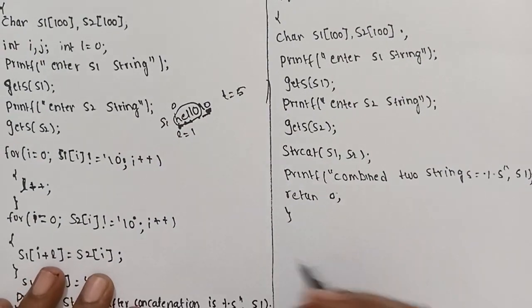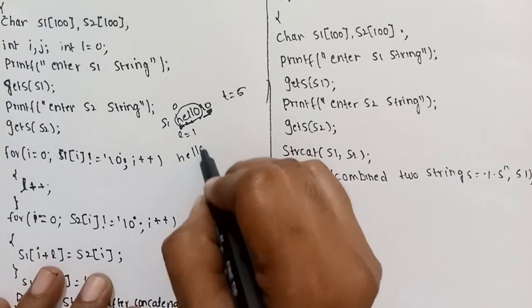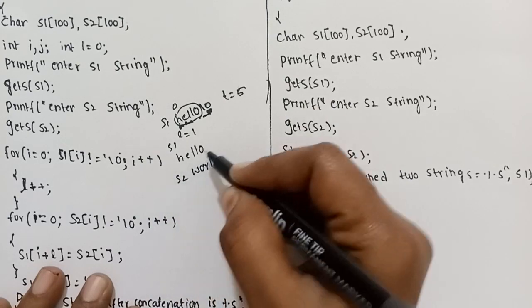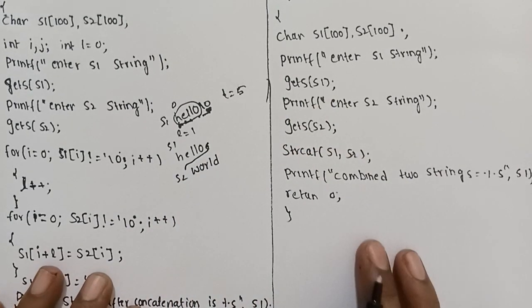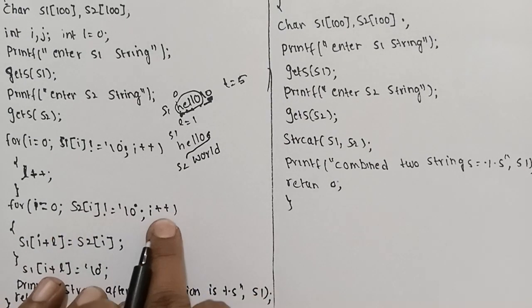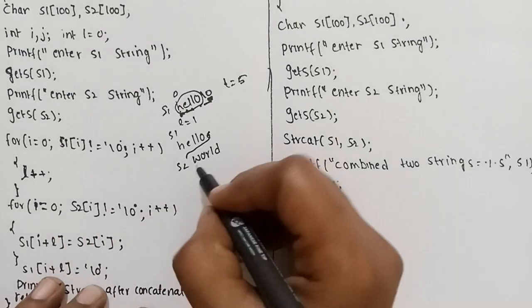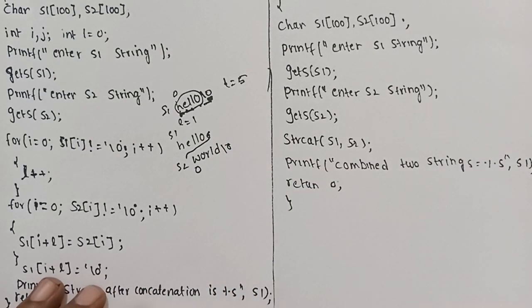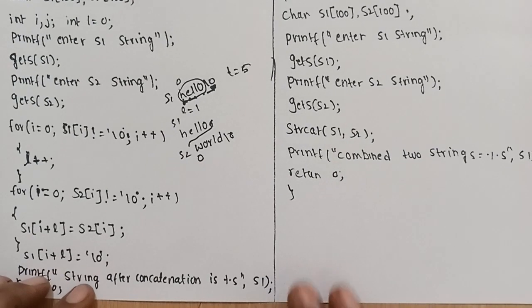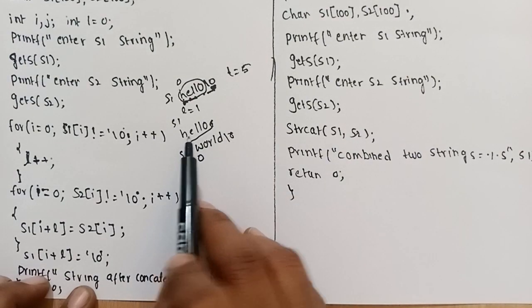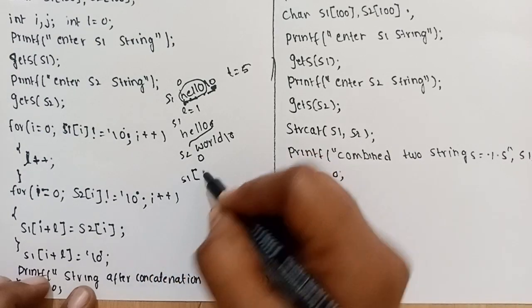Now for S1 = 'Hello' and S2 = 'World'. We again use: for i equal to 0, while S2[i] is not equal to null, i++. Every string ends with a null character at the last position. Now we concatenate S1 with the characters from S2.